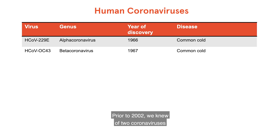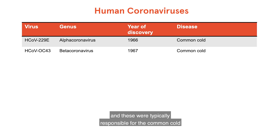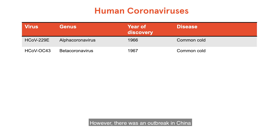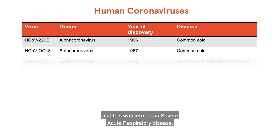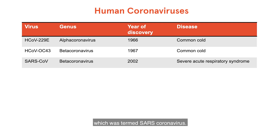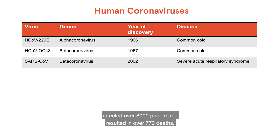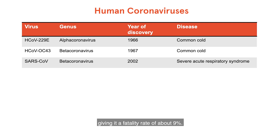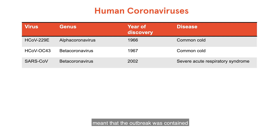Prior to 2002, we knew of two coronaviruses which circulated amongst the human population, and these were typically responsible for the common cold or mild upper respiratory symptoms. However, there was an outbreak in China of an unknown cause, with patients reporting an unusual pneumonia, and this was termed a severe acute respiratory disease. The virus responsible was then identified as the coronavirus, which was termed SARS coronavirus. This virus spread for approximately one year, infected over 8,000 people, and resulted in over 770 deaths, giving it a fatality rate of about 9%. However, good public health measures meant that the outbreak was contained within a year.